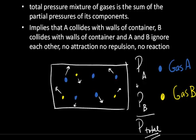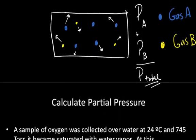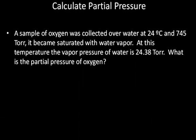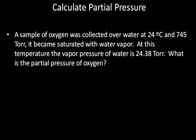So that's Dalton's law of partial pressure. Let's use that law to calculate the partial pressure of a gas. In this case, a sample of oxygen was collected over water at 24 degrees Celsius and 745 torr. It became saturated with water vapor. At this temperature, the vapor pressure of water is 24.38 torr. What is the partial pressure of oxygen?